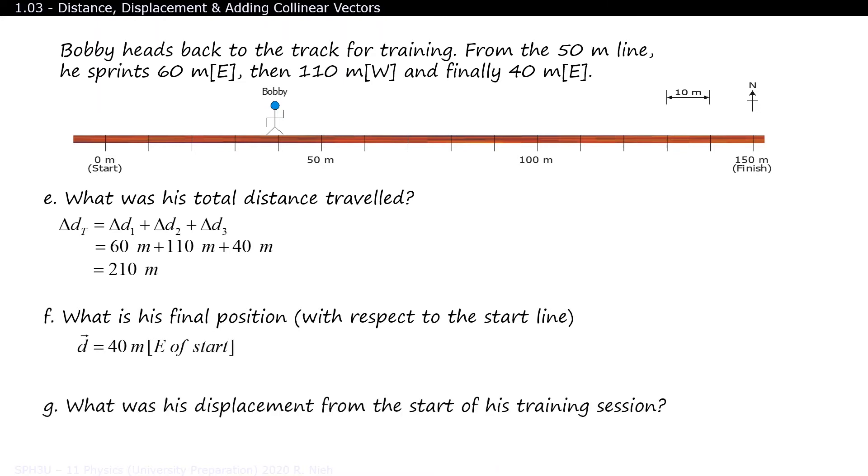Lastly, what is his displacement? Remember that displacement is your net travel from where you started. Bobby started at the 50 meter line and finished at the 40 meter line. So his net travel is 10 meters. Displacement is also vector quantity, so you must also include the direction west as well.